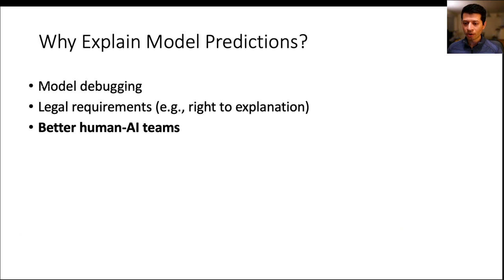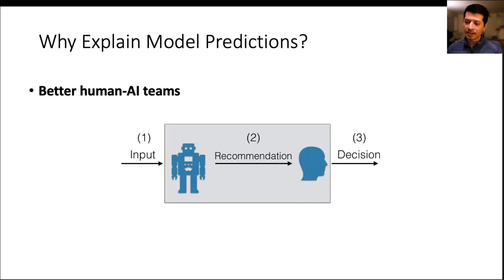For example, one common form of teamwork is AI-assisted decision-making, where the AI provides its predictions as recommendations to users who retain the agency to make the final decisions.